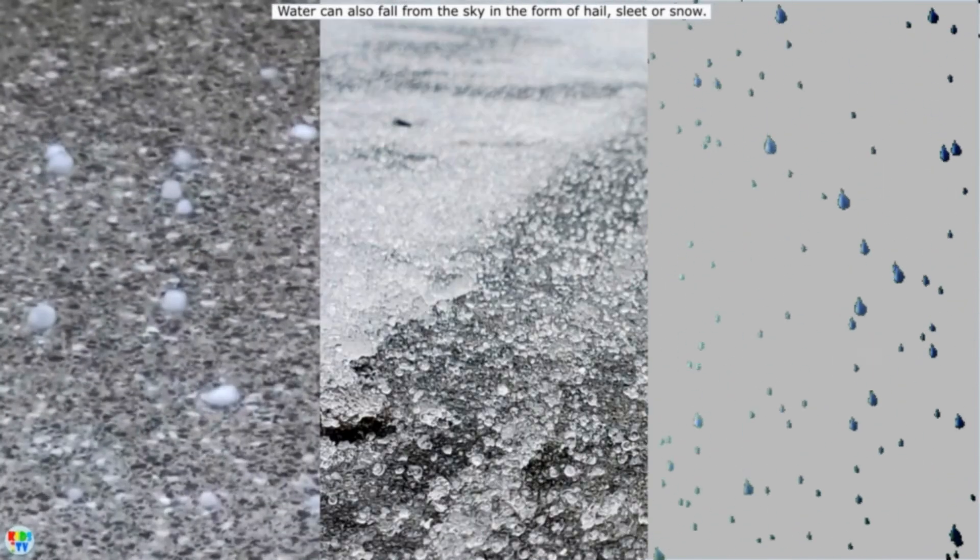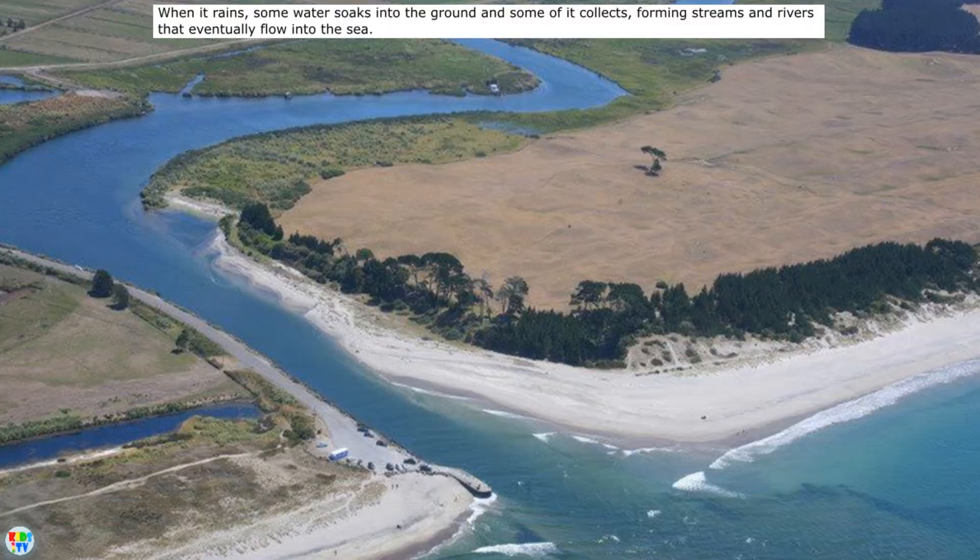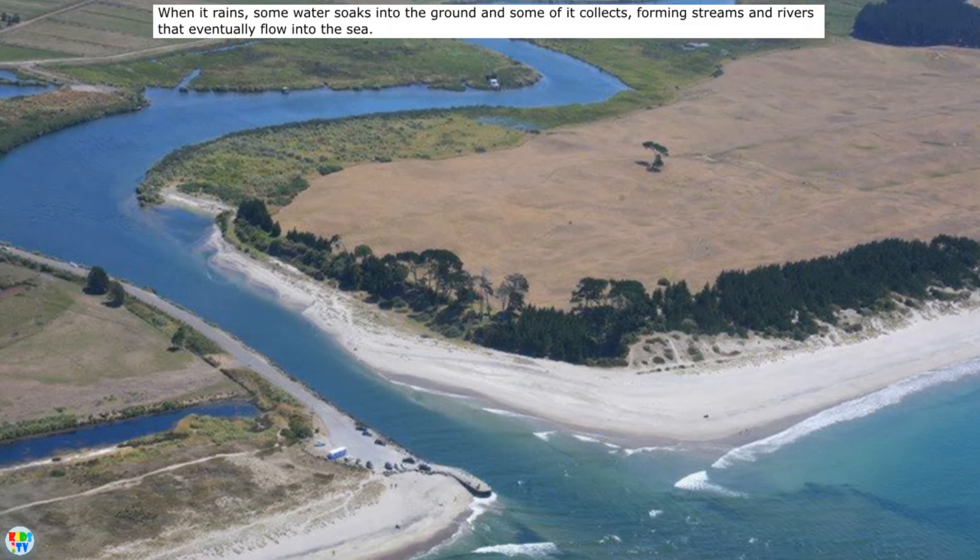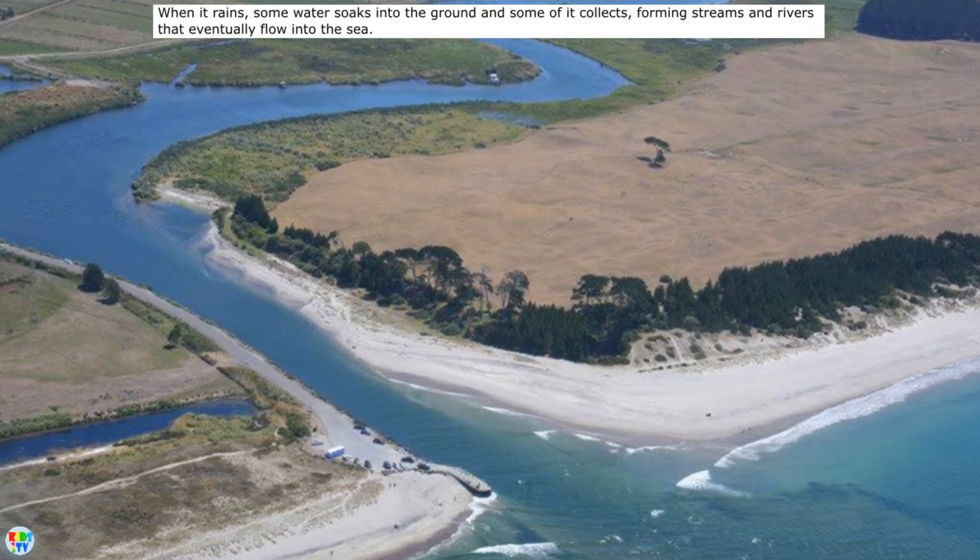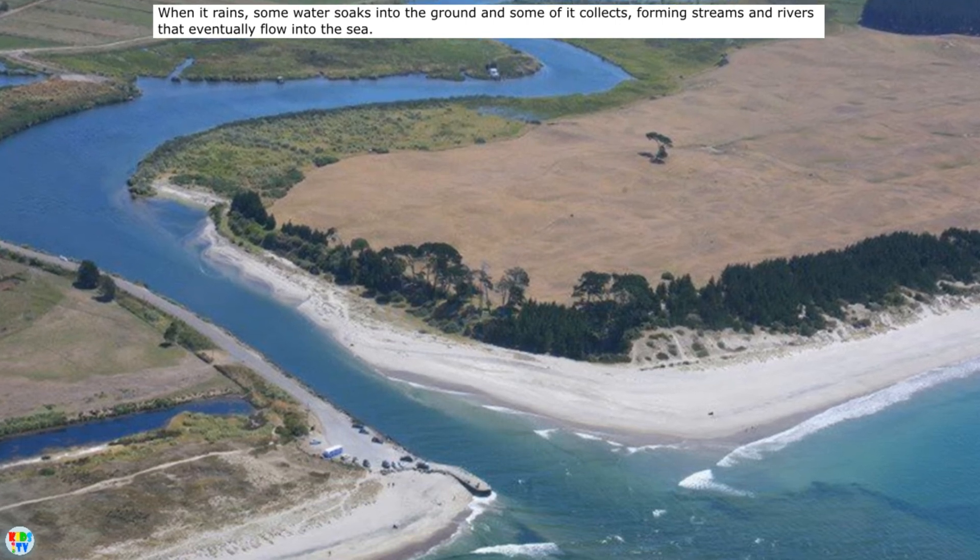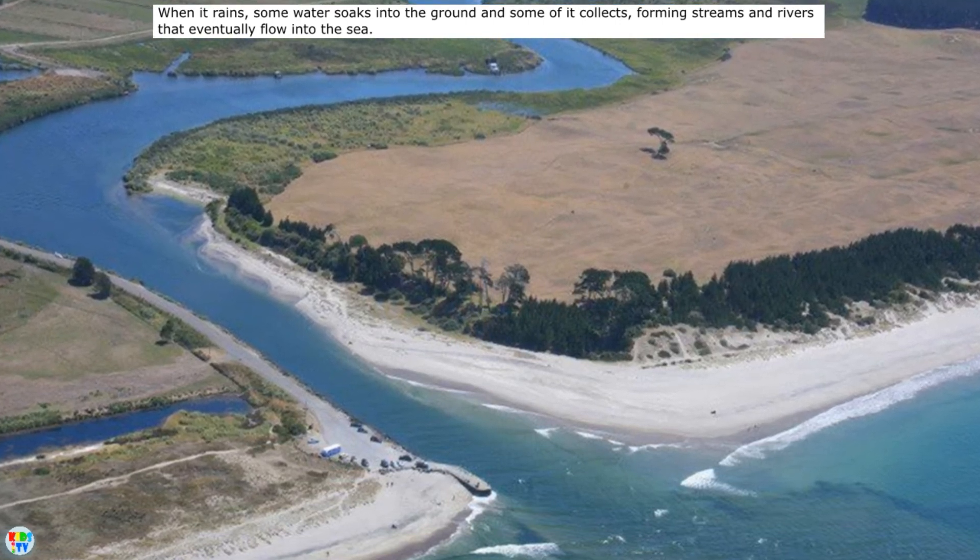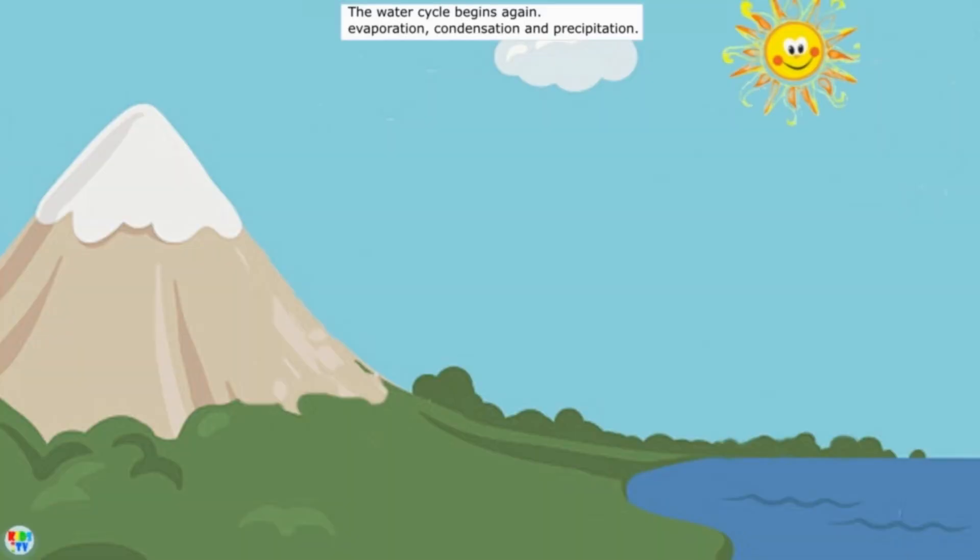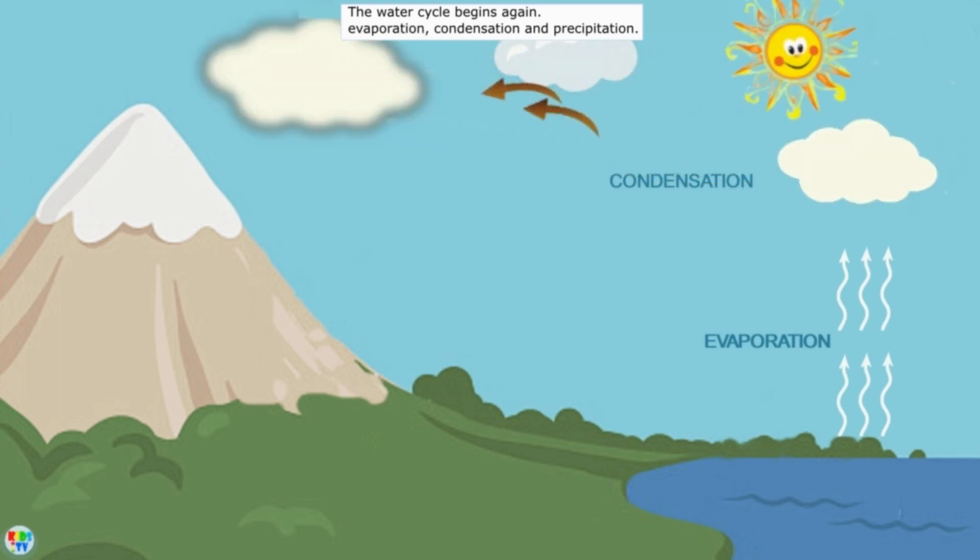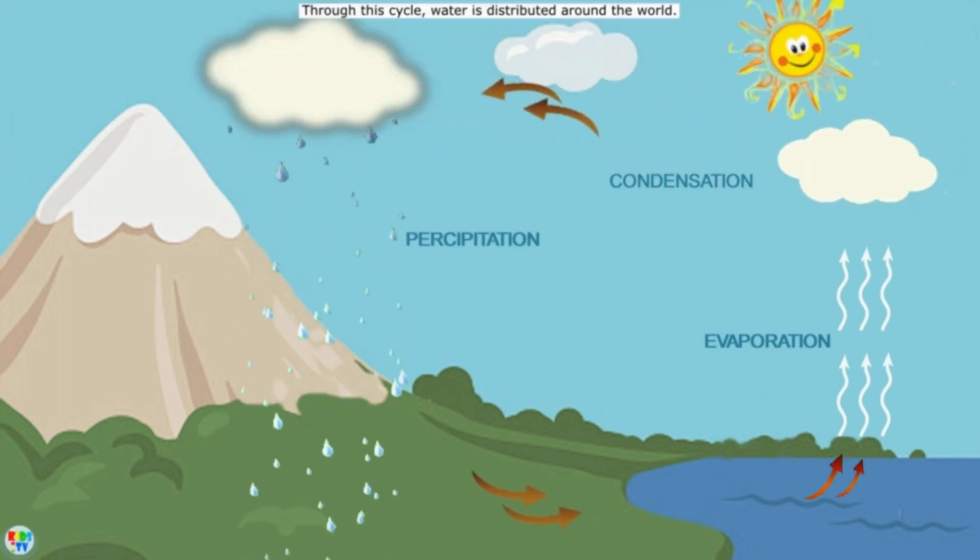Water can also fall from the sky in the form of hail, sleet, or snow. When it rains, some water soaks into the ground and some of it collects, forming streams and rivers that eventually flow into the sea. The water cycle begins again: evaporation, condensation, and precipitation. Through this cycle, water is distributed around the world.